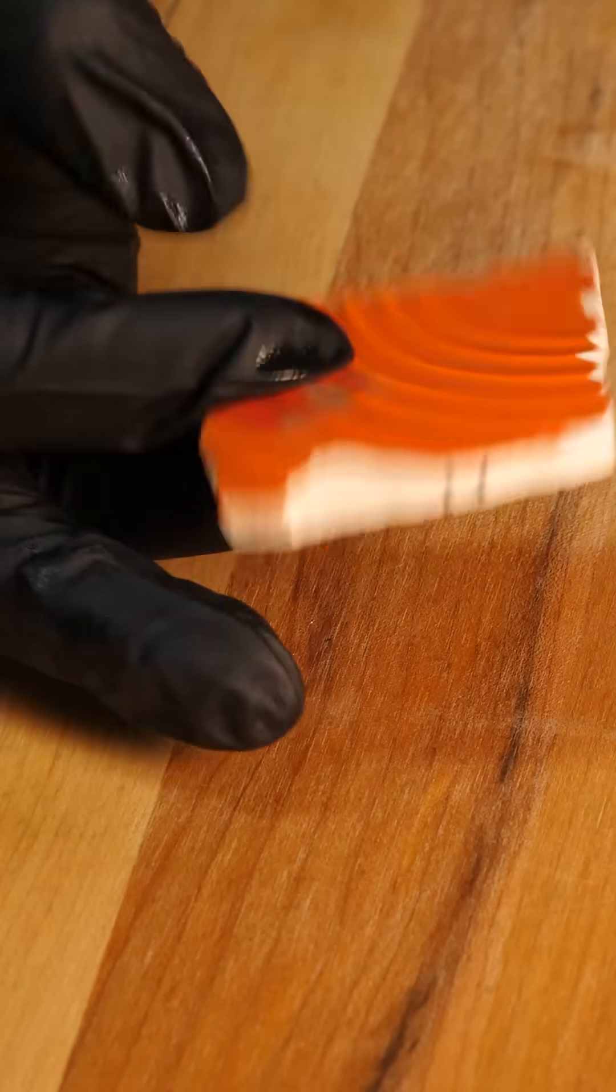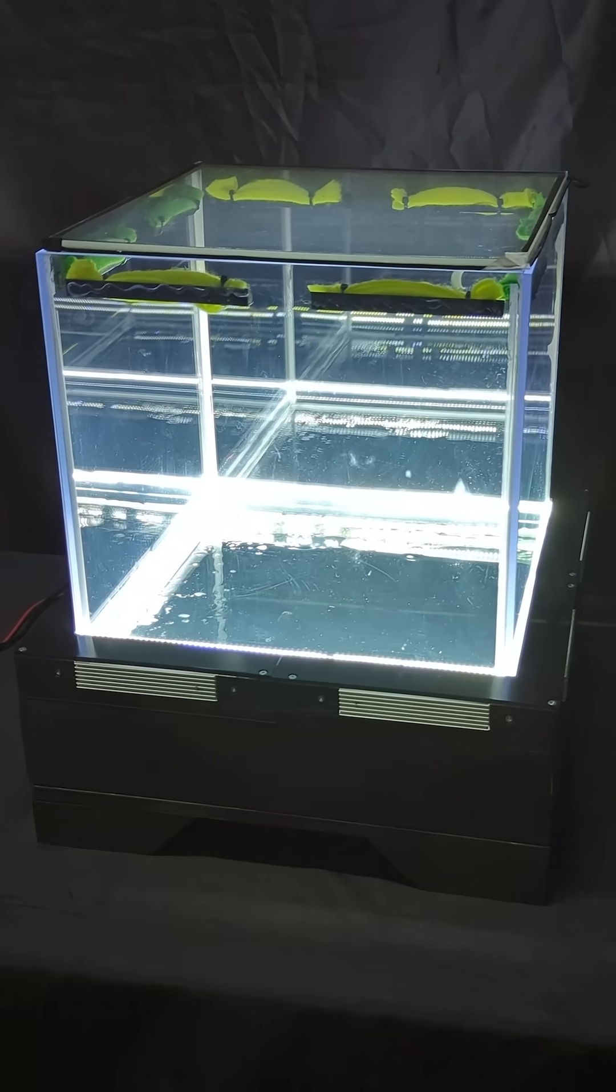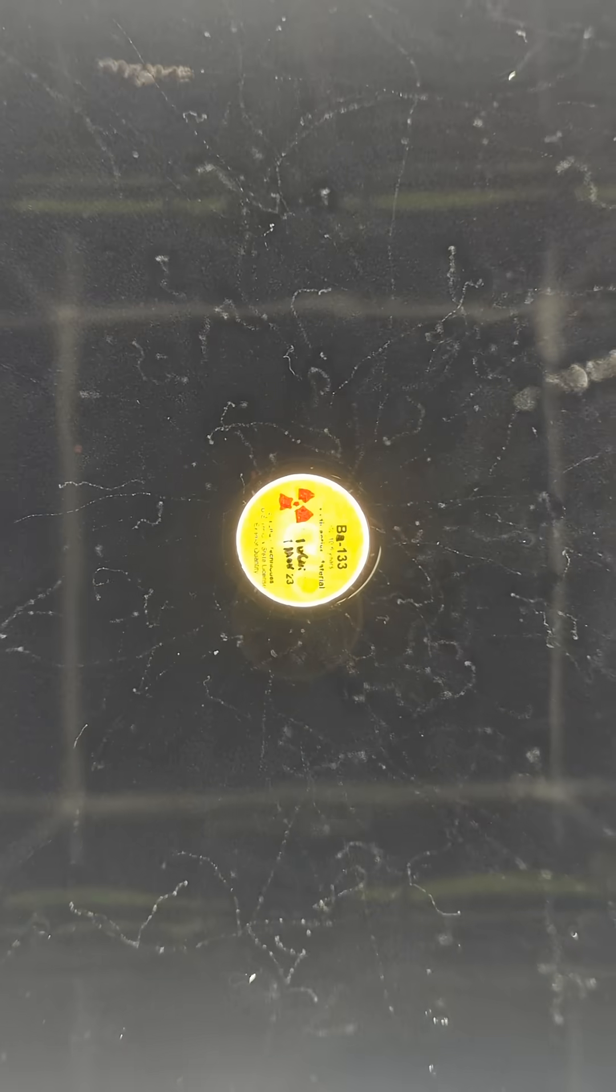But look what happens when I put a piece of one of these plates into this strange looking box. This is a special device called a cloud chamber, and it makes radiation visible.